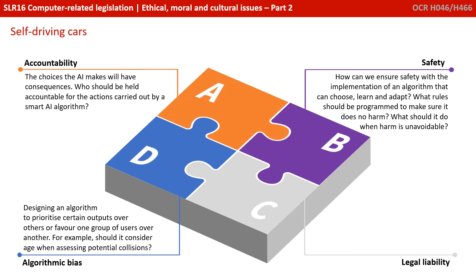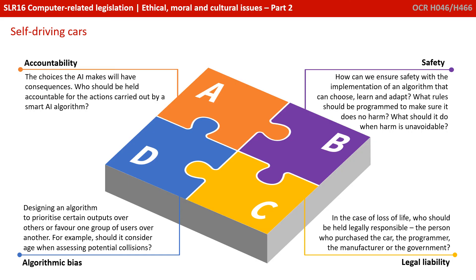Accountability: the choices the AI makes will have consequences. Who should be held accountable for the actions carried out by an AI? And this leads us on to legal liability. In the case of injury or loss of life, who should be held legally responsible? Is it the person who purchased the car, the programmer, the manufacturer, the government? There's no right or wrong answer here, but being able to understand some of these problems and the lenses through which you can look at them will help you answer these sorts of questions in the exam.